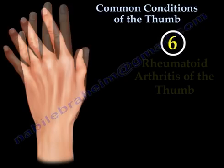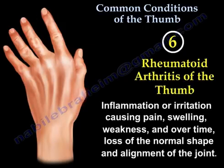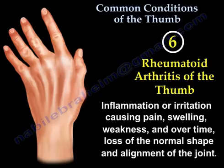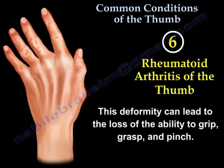Rheumatoid arthritis of the thumb. The inflammation or irritation causes pain, swelling, weakness, and over time loss of normal shape and alignment of the joints of the thumb. The deformity can lead to loss of the ability to grip, grasp, and pinch. The most common deformity is called the boutonnière deformity of the thumb.